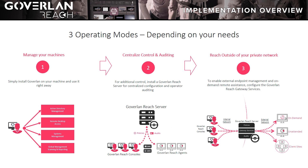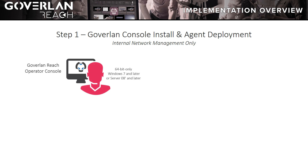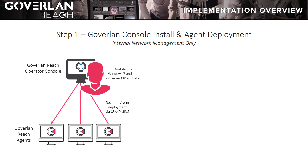Here is an overview of the three possible layers of implementation, depending on the features you'd like to take advantage of. The first layer, for internal network management only, consists of simply installing the Goverland Console on your daily-use 64-bit only Windows 7 to Windows 10 operating system. Windows Server 2008 or later is also supported. Then, using the console to deploy your Goverland Agents on the fly via the Windows File and Print Sharing C$ and Admin$ shares on any machine with Windows XP to 10, or Windows Server 2003 to 2016, both 32 and 64-bit. The Goverland Agent Service will then be listening on the default port of 22000, which the Goverland Console communicates directly to.